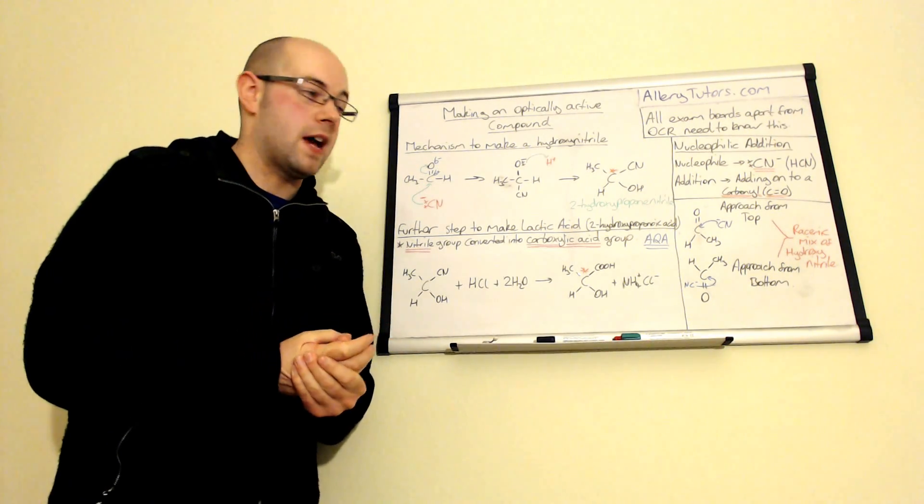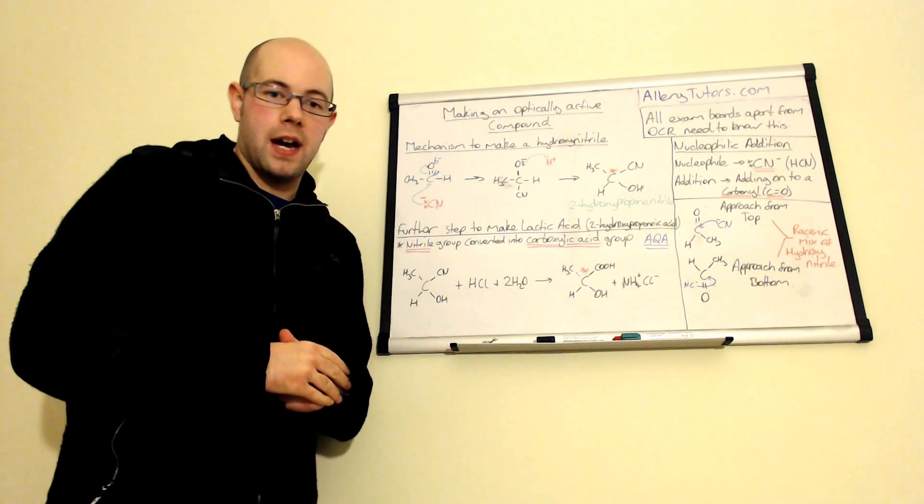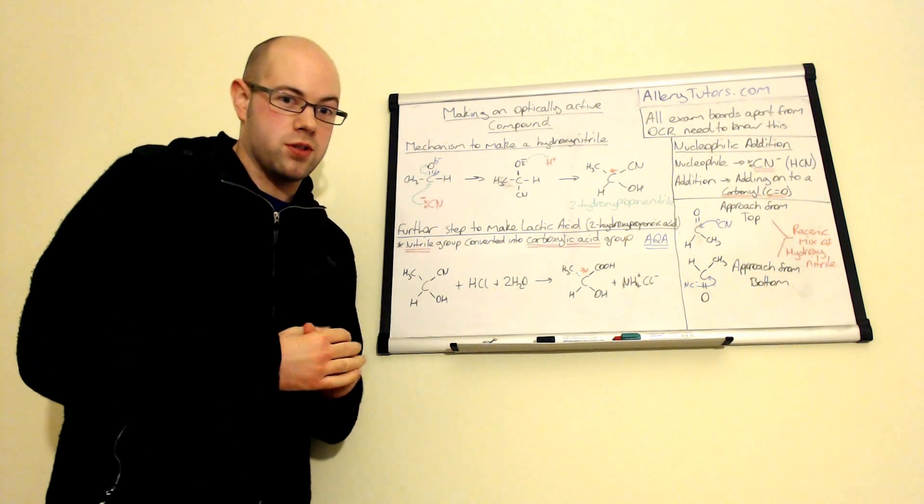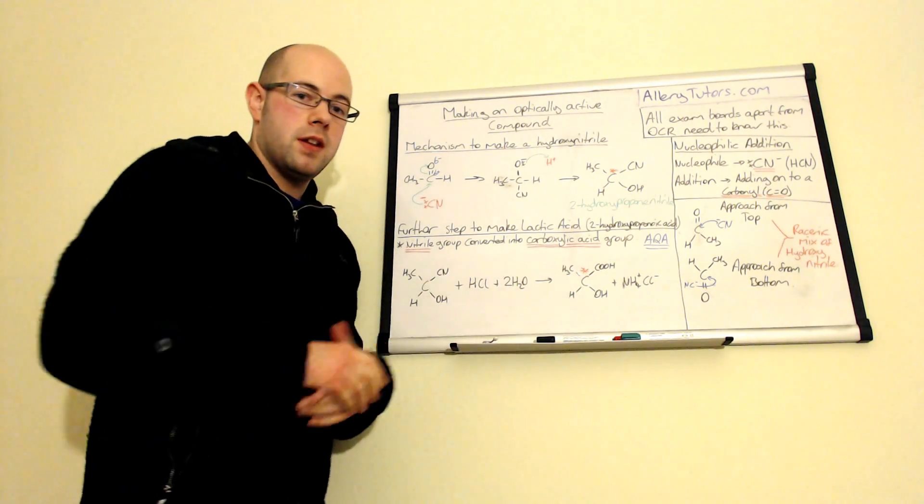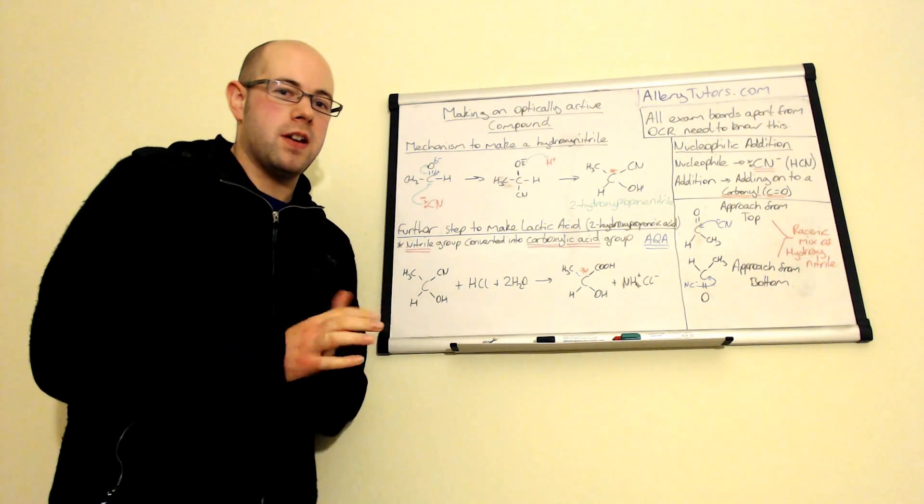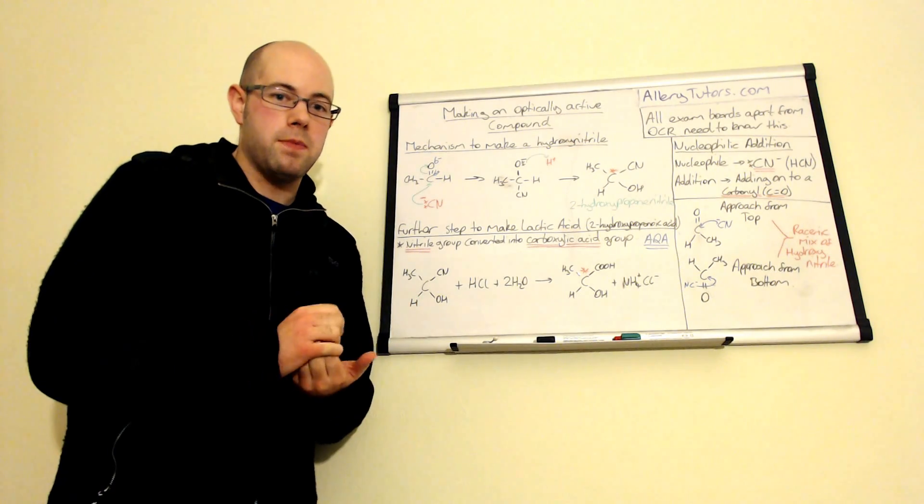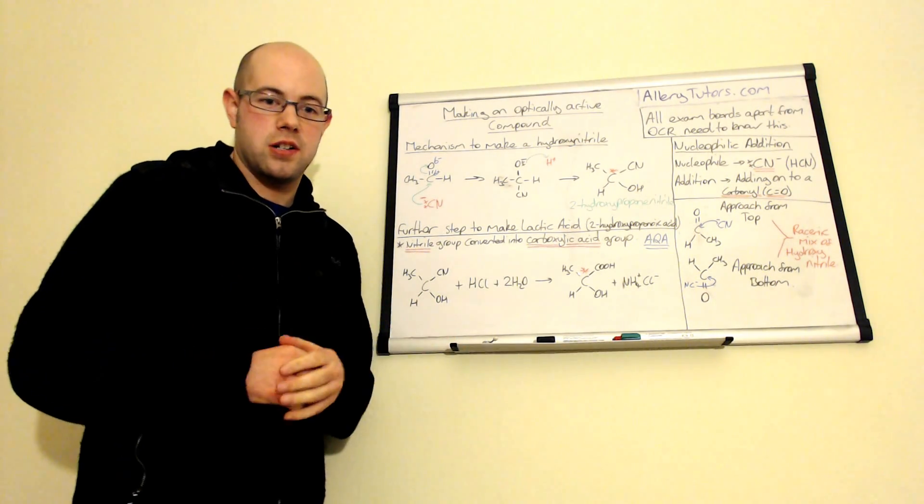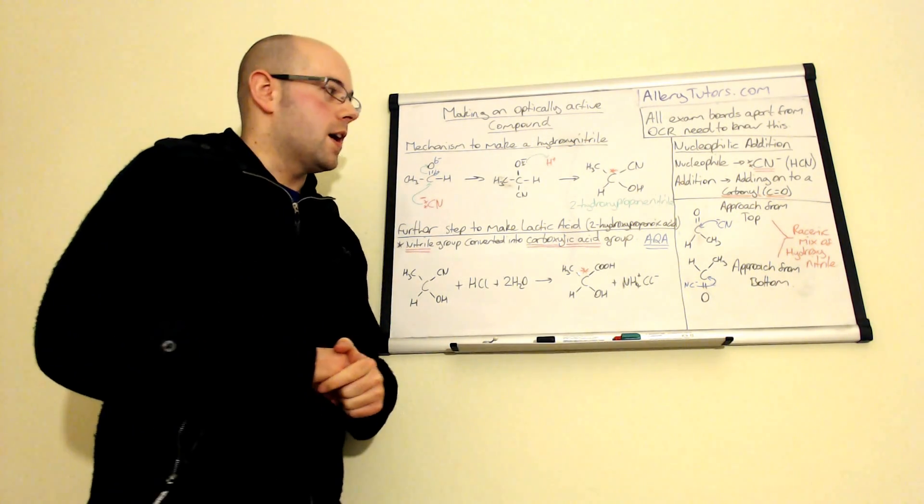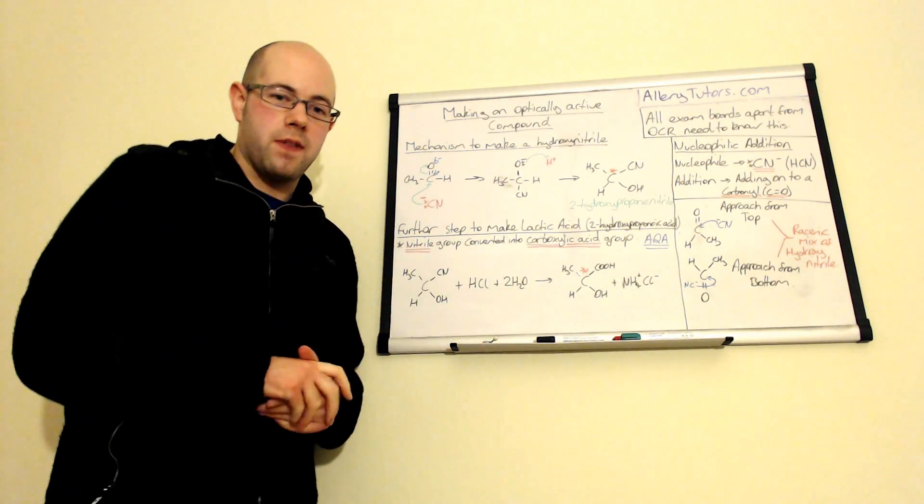Now, a manufacturer might then go back and might actually look for different synthetic routes to try and make a molecule without the other enantiomer in there. But generally, most of the time, they just keep the enantiomer in there if it doesn't actually have a negative effect.